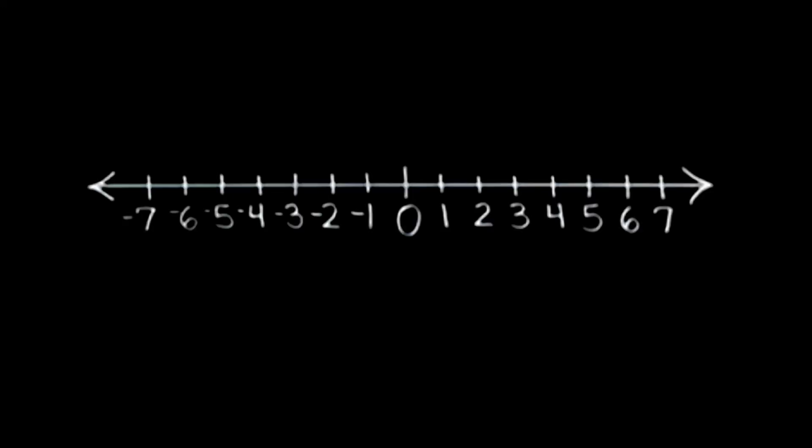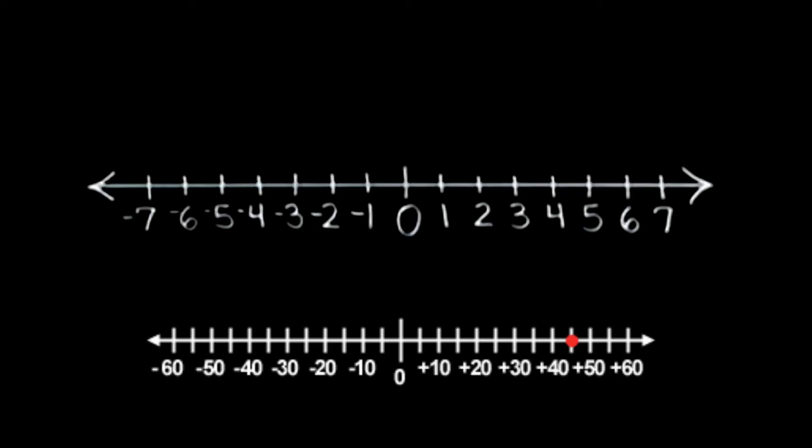In this problem, we're asked to graph 45 on the number line. Notice that we can't graph 45 on the number line we've been using. There's no place for 45. So in this situation, we have to change the scale of our number line. I would recommend going up by increments of 10. You can go up by increments of 5, 10, you can go up by 20 if you wanted to. 20 actually seems a little bit too big. So no matter what increments we use, whether that's positive 5, positive 10, positive 15, whatever, we have to change the scale of our number line in order for 45 to fit.